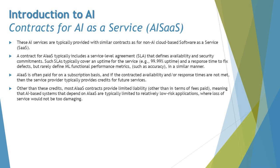Talking about contracts for AI as a Service — these AI services are typically provided with similar contracts as non-AI cloud-based services, such as Software as a Service. These are not very different in terms of how any other supplier embeds their products with yours. For example, it is similar to how PayPal offers their payment gateway for e-commerce websites — the contracts work the same way, except the service is an AI service instead of a payment gateway.